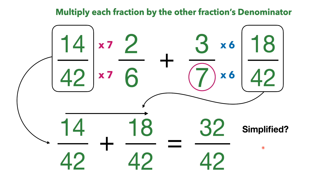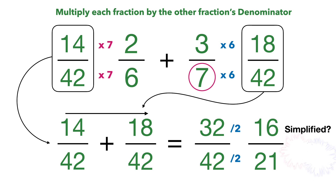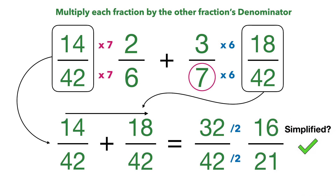This one is not fully simplified, so we have one thing left to do — let's simplify it. We can divide both 32 and 42 by 2: 32 divided by 2 is 16, 42 divided by 2 is 21. And this is fully simplified, so we are done.